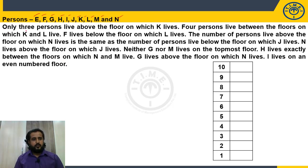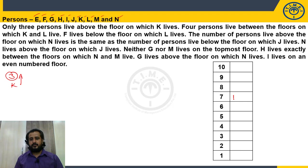Our example is a 10-story building. The first clue: only 3 persons live above the floor on which K lives. So above K there are 3 floors, meaning K will be on the 7th floor. This is fixed directly from the clue.